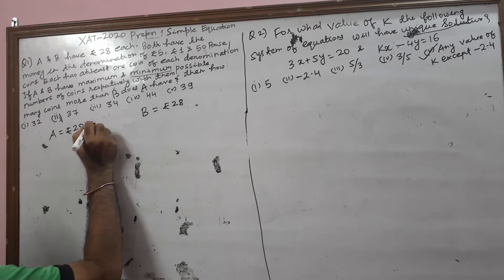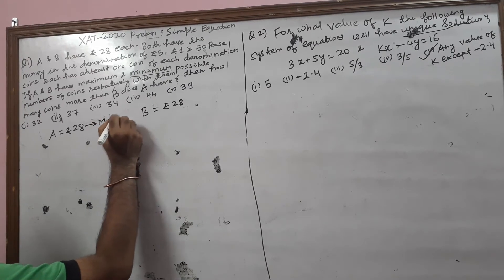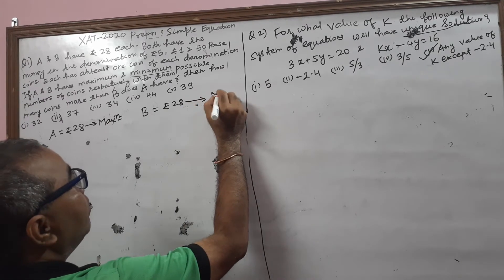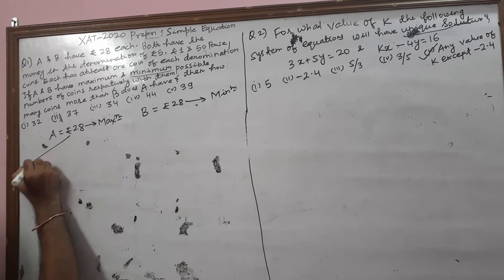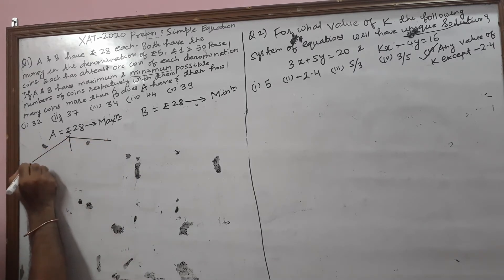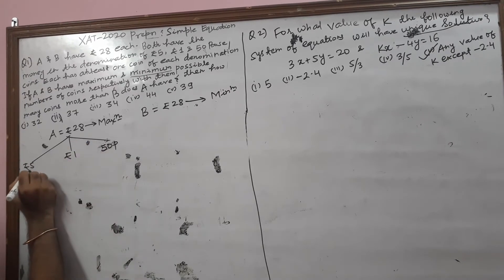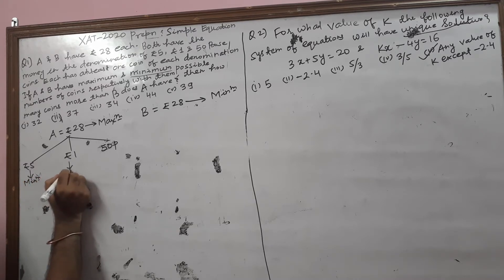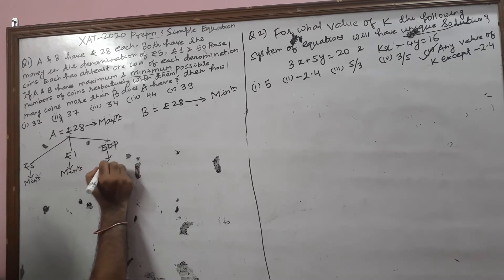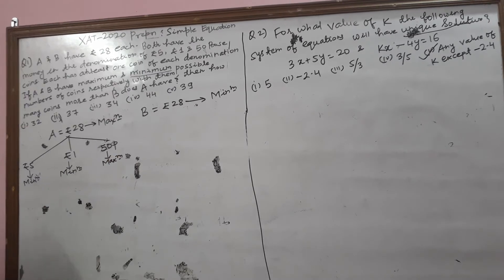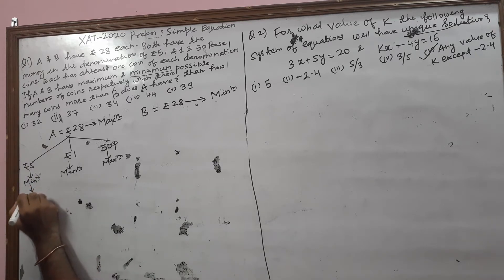Here we are taking: A has the maximum number of coins and B has the minimum number of coins, in the denominations of rupees 5, rupees 1, and 50 Paise coins. If A has the maximum, then rupees 5 is the minimum — so 1 coin — and rupees 1 is also minimum — 1 coin — and 50 Paise coins is the maximum. So here, 1 coin of rupees 5 whose value will be rupees 5.